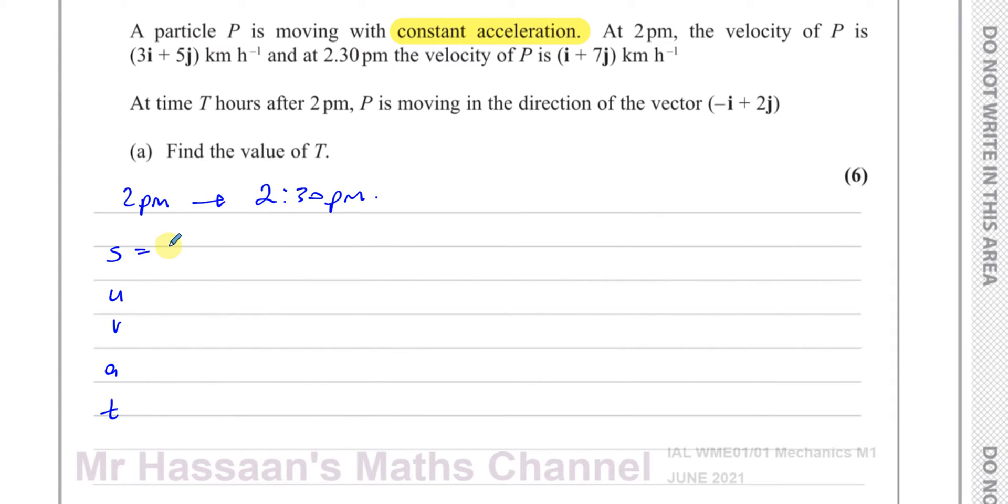Alright, so we don't know the displacement. The initial velocity at 2pm is 3i plus 5j, so 3, 5. The final velocity at 2:30pm is 1, 7. I like to use column vectors in my work. The acceleration is what I'm going to find here, and the time is half an hour. So V equals U plus AT will apply here, because we need to find A, and we know U, V, and T.